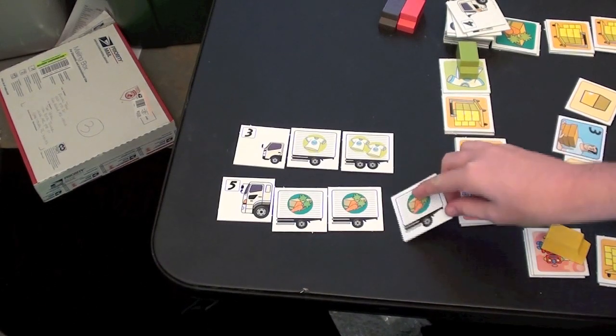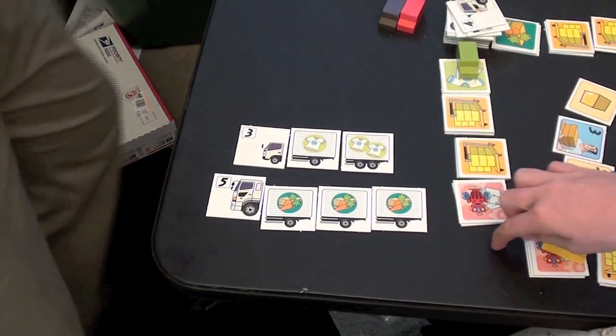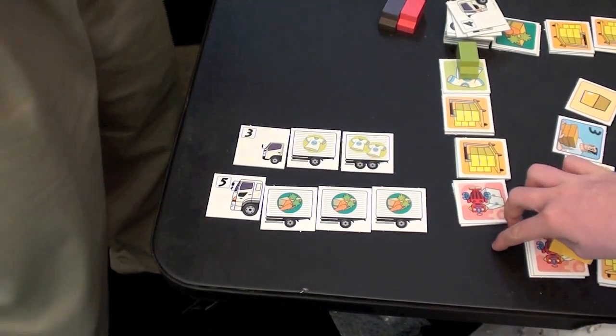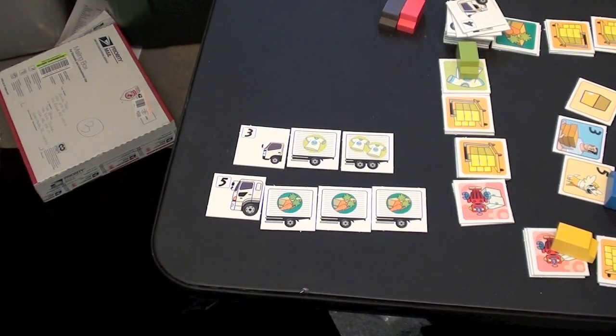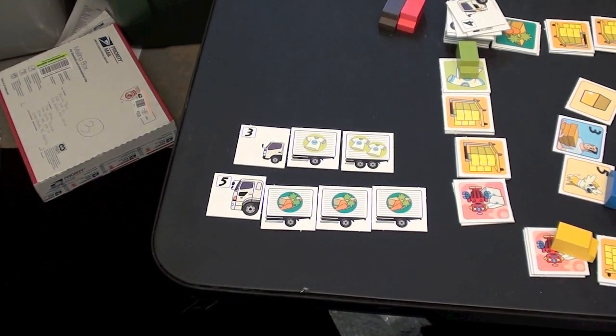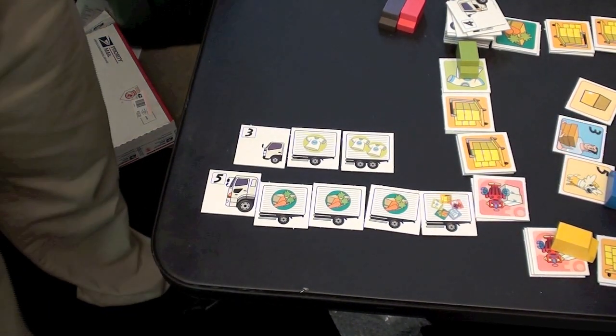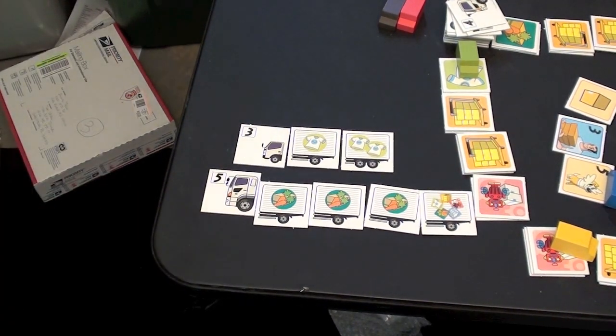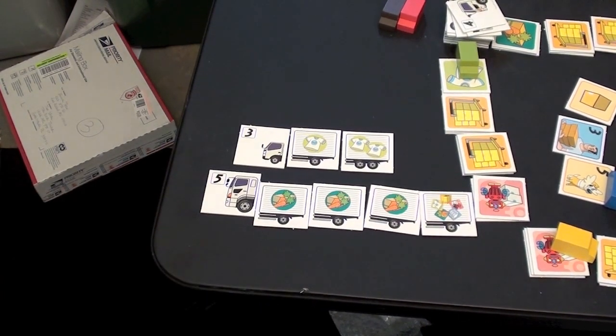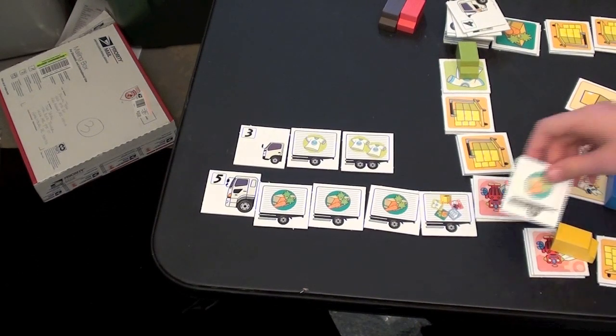You keep going around until one player has gone around three times, at which point the game is over. Players will then score points for the goods that they've loaded on their truck. You get the most points if you're the only person to have gotten that type of goods. And you get extra points if you are the person who has the most of that type. And you lose points.